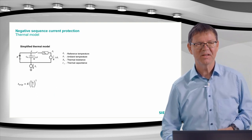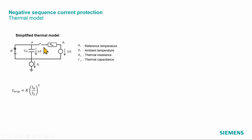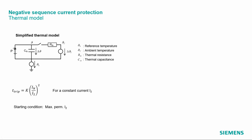This is a simplified thermal model similar to the starting time supervision. The tripping time formula uses the negative sequence current I2 in place of the starting current. A starting condition is required since the switch is open in this model. The starting criterion is the maximum permanently allowed negative sequence current — a value typically obtained from the motor manufacturer, normally around 8 to 10 percent.